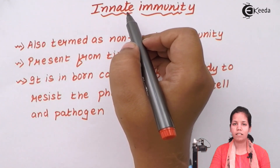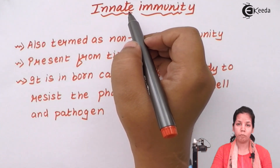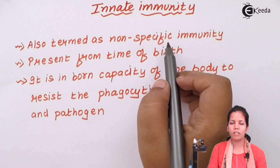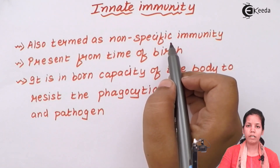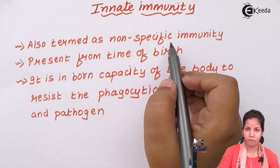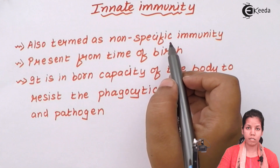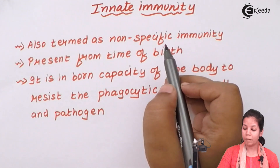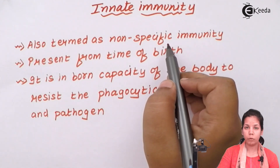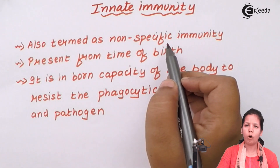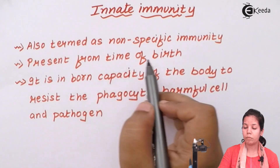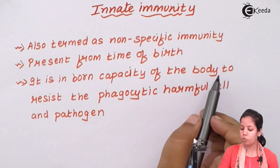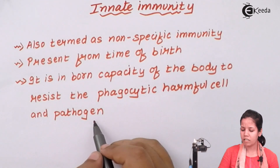Innate immunity — in simple language, it is inborn immunity, or the immunity that was present when you were born, also known as non-specific immunity. Innate immunity is known as non-specific immunity because every immunity type has a particular order and fashion it follows. For example, your T cells are directed to only certain functions, your B cells are directed to only certain functions — they never crisscross or exchange their functions. But innate immunity does every function together, all in totality. It is one capacity of the body to resist phagocytic harmful cells as well as pathogens.